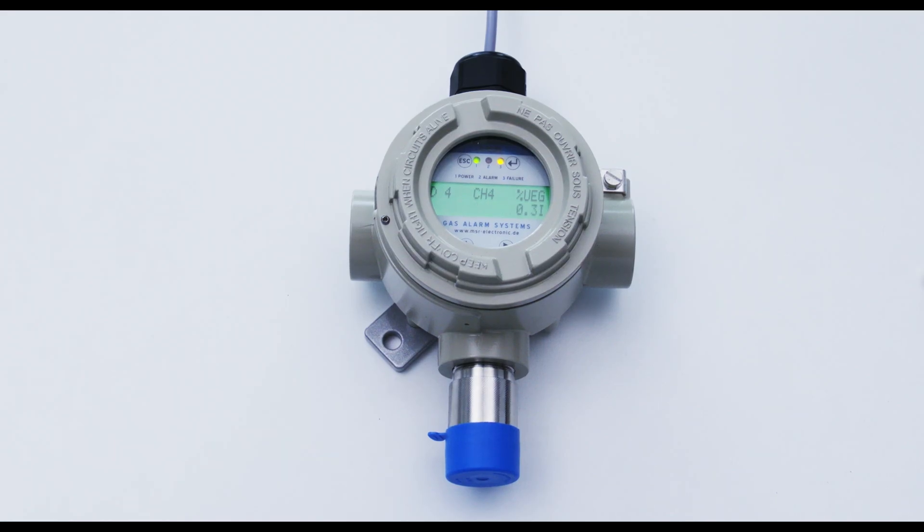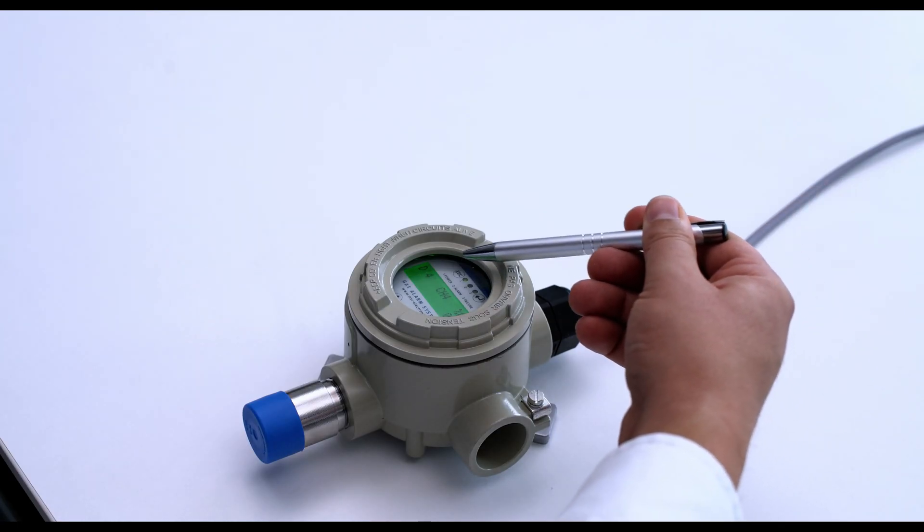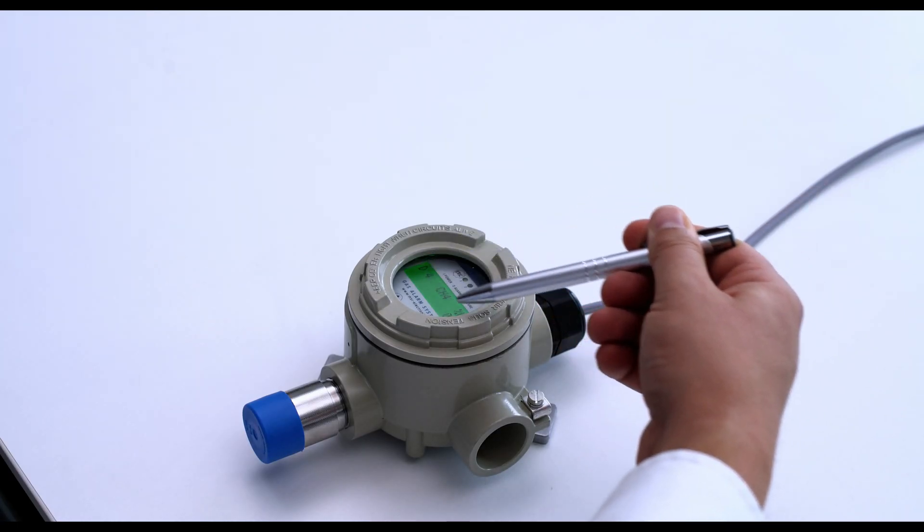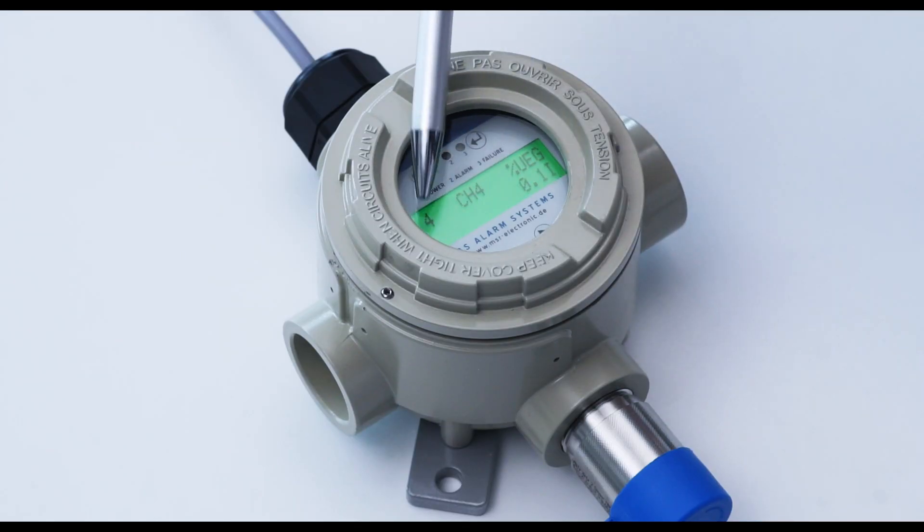The green LED on the display lights up when the instrument is ready for operation. Display with three status LEDs. The display indicates the address of the sensor, the gas type, and the measuring value.